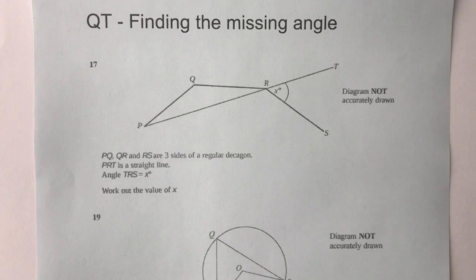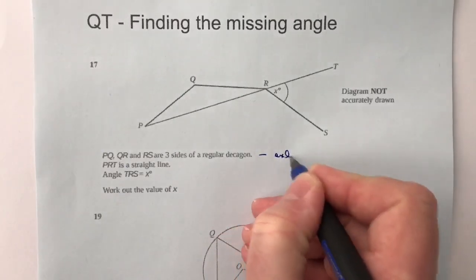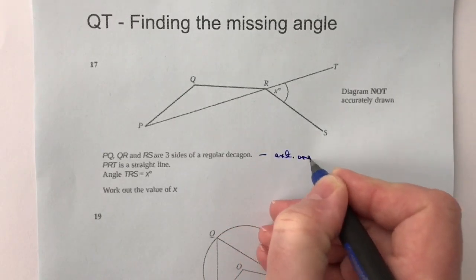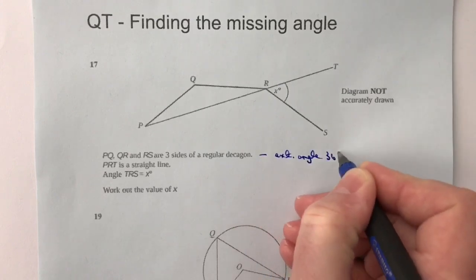Okay, so before I'm going to go any further, what I do know is that all the angles in a regular polygon or a regular shape, the external angles add up to 360 degrees. So if there's ten of them, it means that the external angle is going to be 36 degrees.